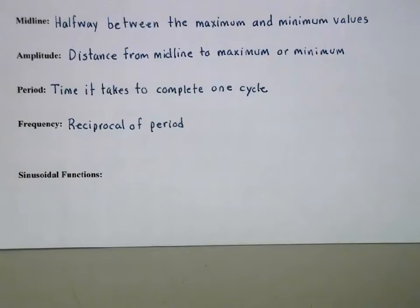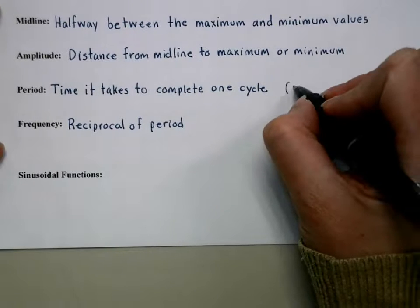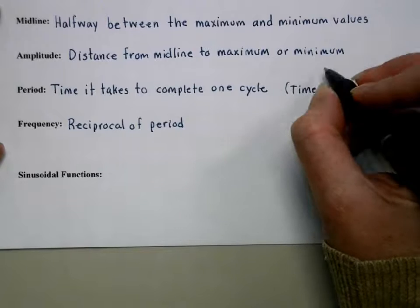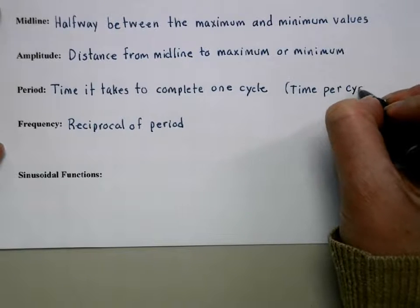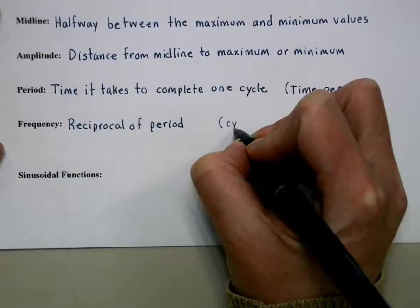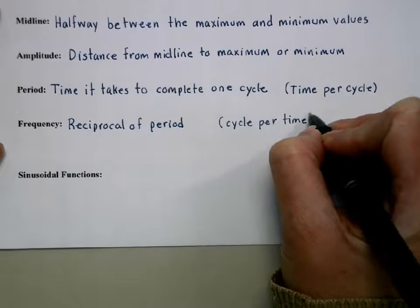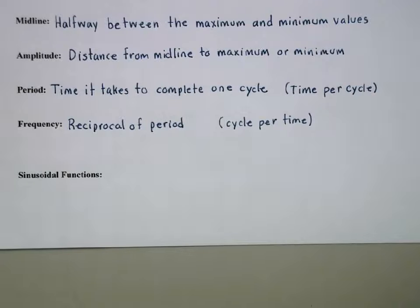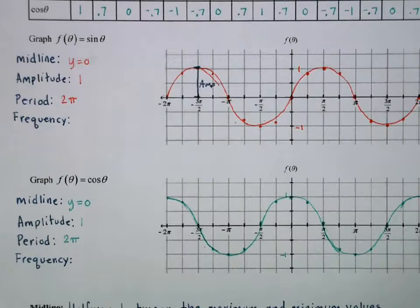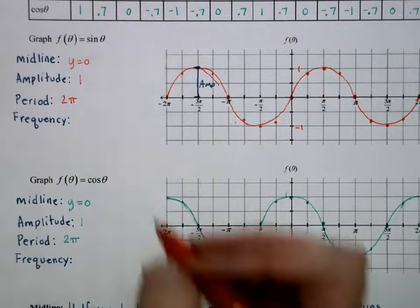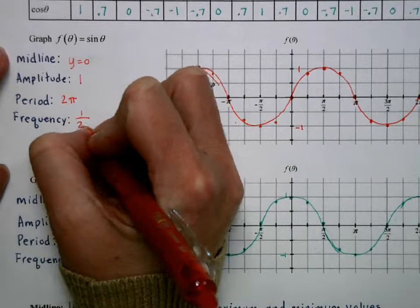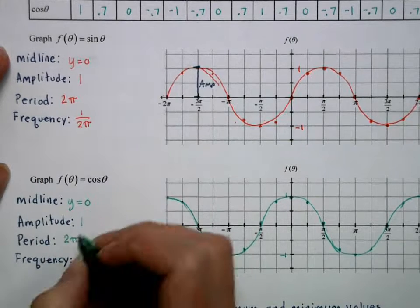And then our last attribute that we're going to talk about today is the frequency, which is the reciprocal of period. Because period is the time it takes to complete one cycle. Frequency is how many cycles in a set amount of time. So that might be something like we complete five cycles in one minute. Something like that would be a frequency. So the frequency period is 2π, frequency is 1 over 2π, and that's the same for both sine and cosine.